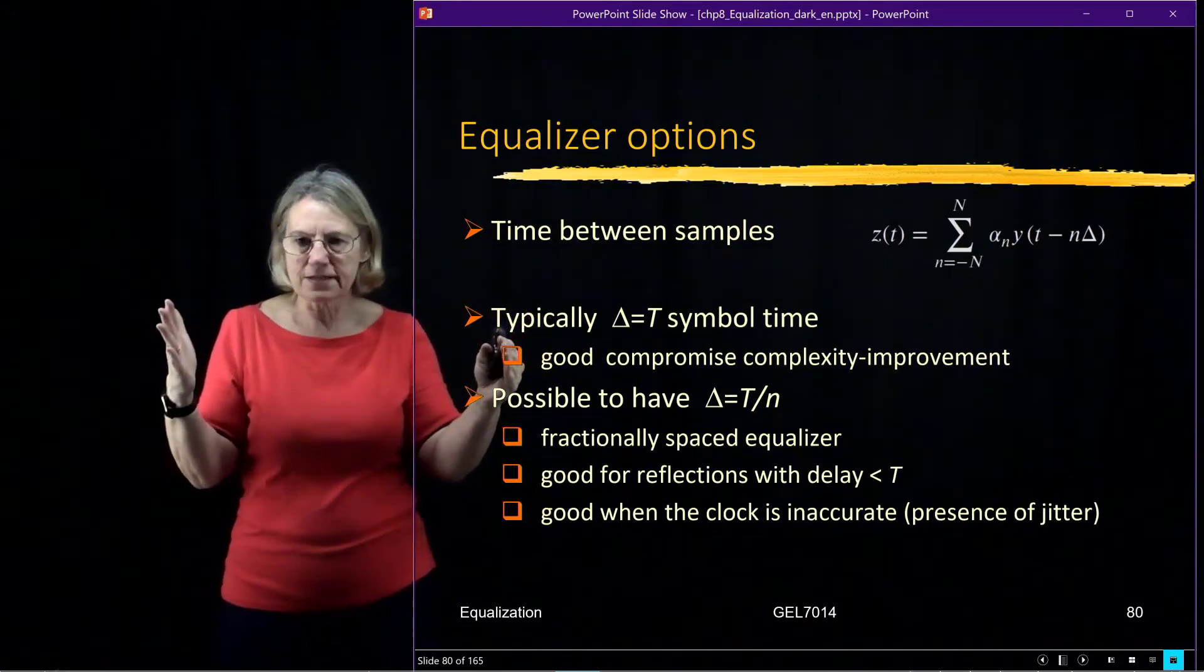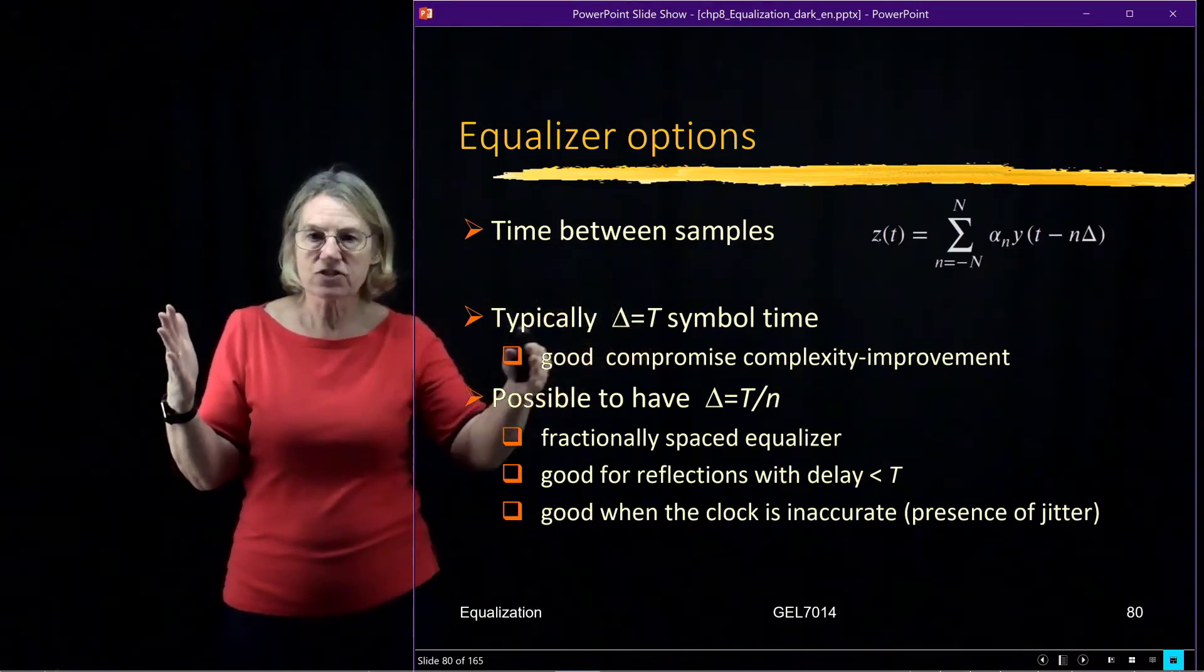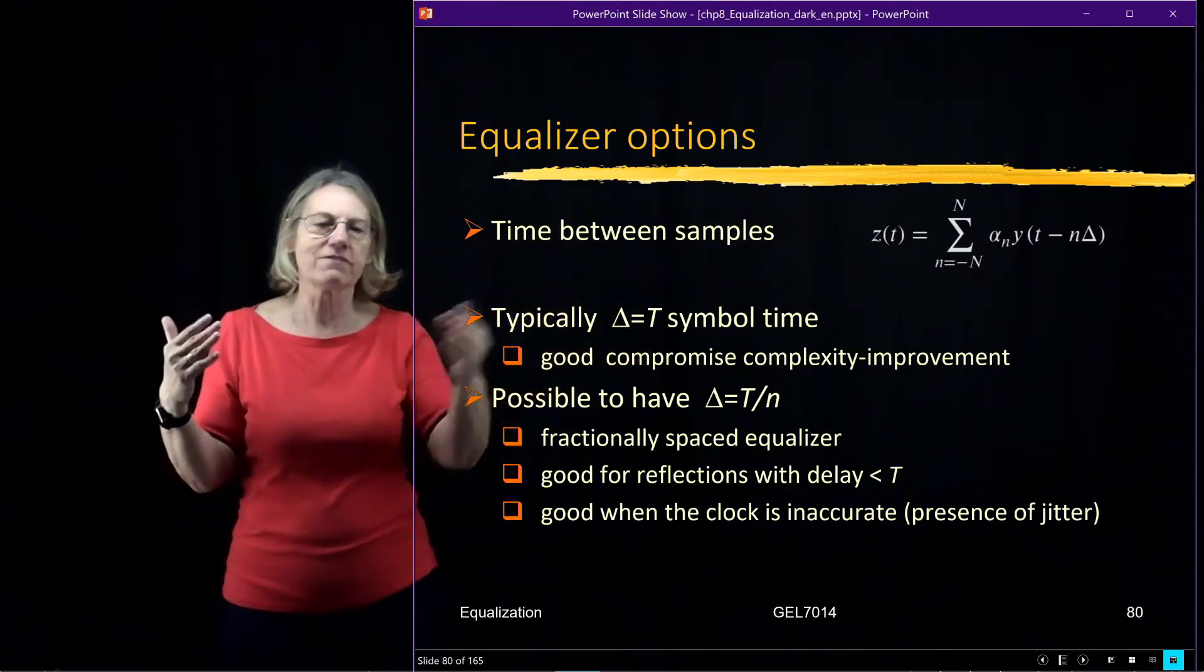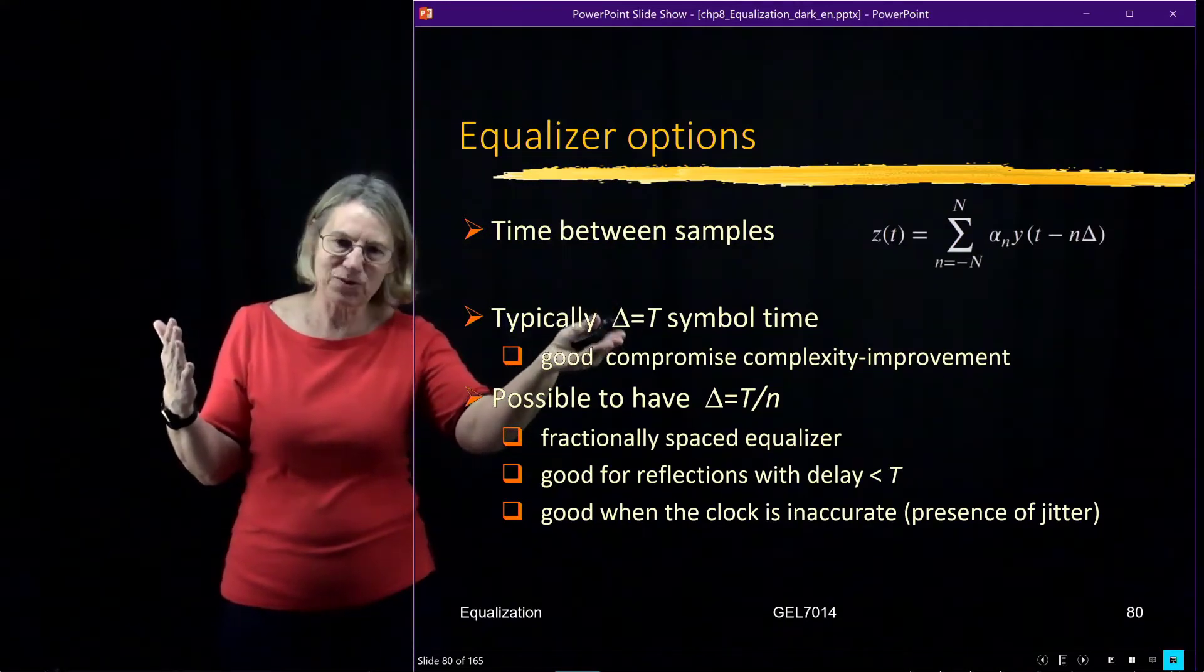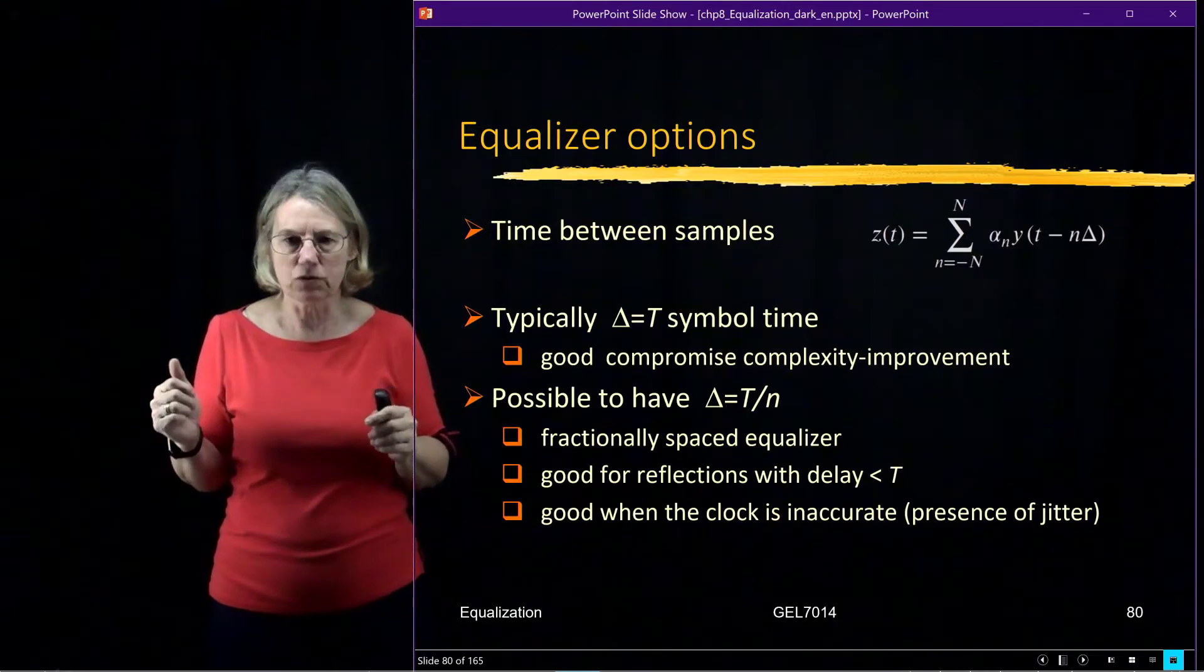And that should give me good performance. And if I want to do sampling which is faster, that means I'm going to double, or if I do twice as much, twice as fast sampling, I would double the number of taps to look at the same observation window.